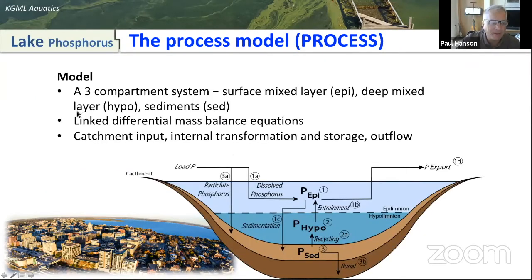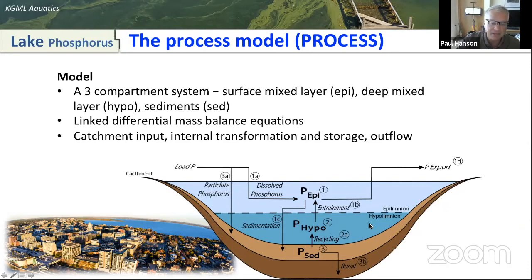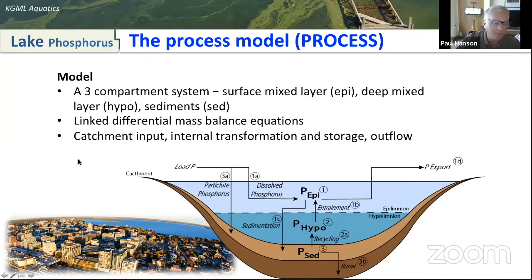The process model is a very typical approach for modeling biogeochemistry in a lake. This schematic shows a lake during the summertime when it's thermally stratified. The upper layer is warm — it's where we would swim — while the lower layer, called the hypolimnion, is cold, and when it becomes anoxic it is a place where cold water fish species end up dying. The third layer is the sediment. Phosphorus comes in from the catchment, is processed within the lake — some of it is stored, some is recycled, some is exported downstream — and our goal is to understand those dynamics.